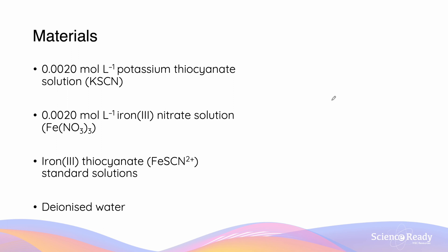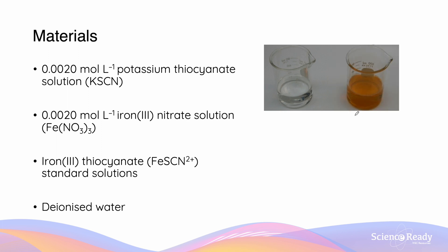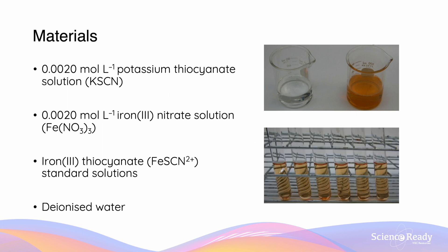Our materials for this particular experiment are going to include 0.0020 mol/L of potassium thiocyanate solution — that's this clear solution over here. We are going to have a 0.0020 mol/L solution of iron(III) nitrate, which is this orange solution here. We are also going to have six different iron(III) thiocyanate standard solutions, which are solutions with a known concentration, and deionized water.